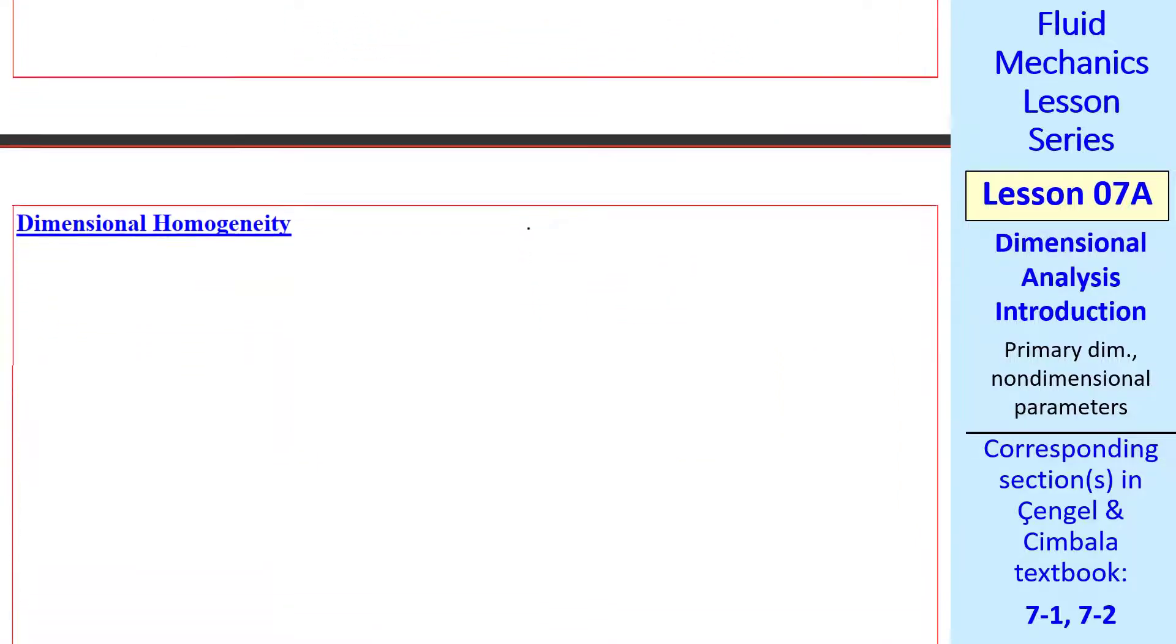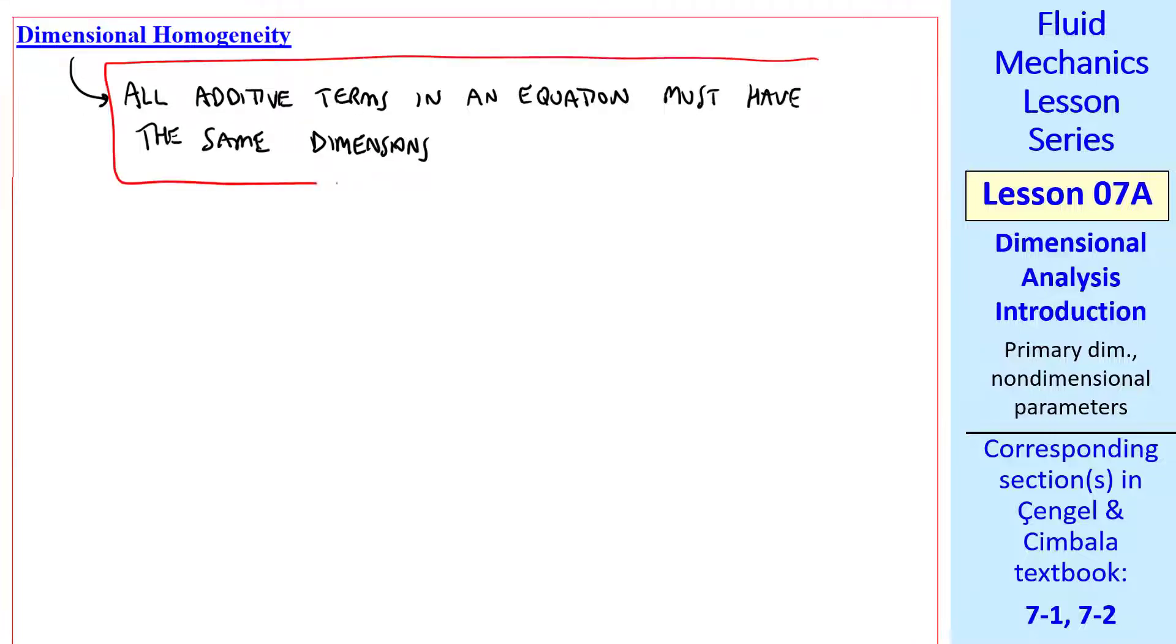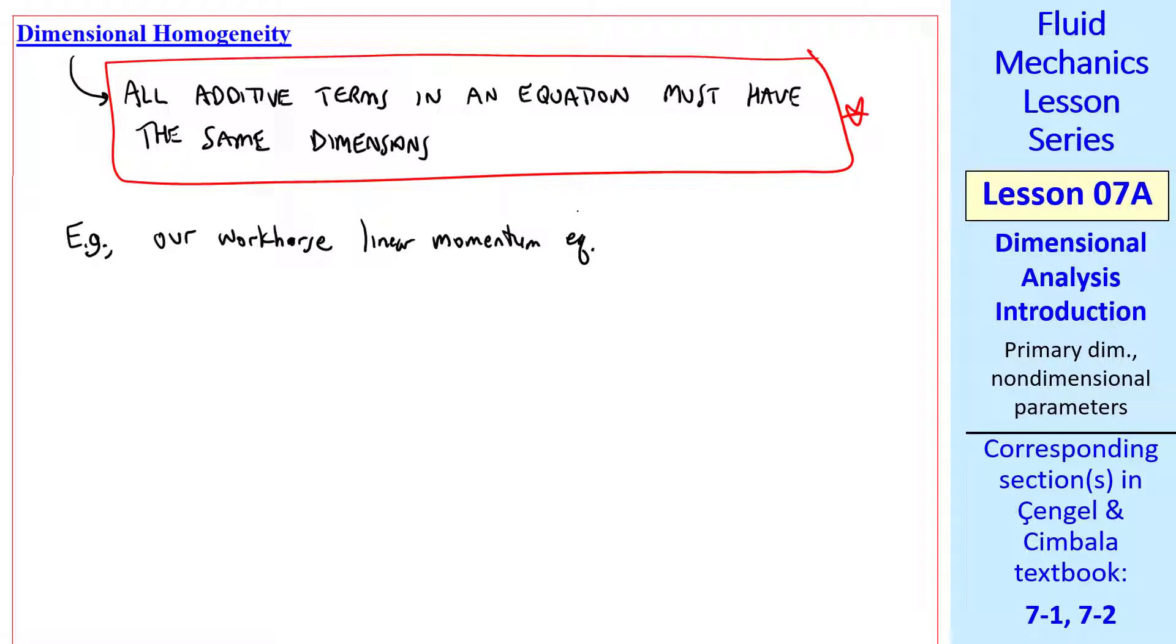Let's talk about dimensional homogeneity. We stated that all additive terms in an equation must have the same dimensions. For example, our workhorse linear momentum equation, for a fixed control volume from a previous lesson, we had sigma f equals sum over the outlets beta m dot v, minus the same thing over the sum of the inlets. Let's look at the primary dimensions of each of these terms.